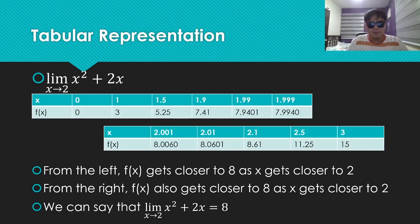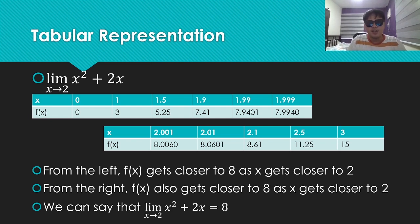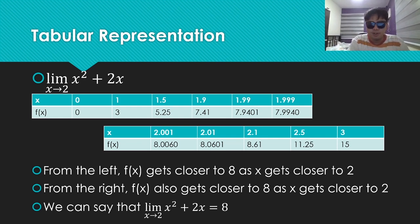This is the tabular representation of the limit. On the top row, we can see values of x as 0, 1, 1.5, 1.9, 1.99, 1.999 — basically, we're going closer to 2, but not quite there. Let's observe the values of f of x: 0, 3, 5.25, 7.41, 7.9401, 7.9940...